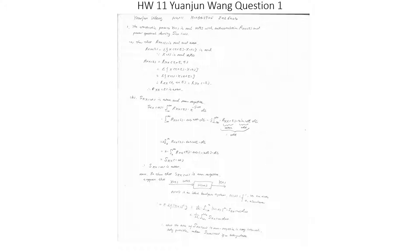This equals the integral from negative infinity to infinity of R_xx(τ) times cos(ωτ) dτ, minus j times the integral from negative infinity to infinity of R_xx(τ) times sin(ωτ) dτ. Since R_xx(τ) is even and sin(ωτ) is odd, their product is odd, so the imaginary part vanishes. This simplifies to 2 times the integral from 0 to infinity of R_xx(τ) cos(ωτ) dτ, which equals 2 times the integral from 0 to infinity of R_xx(τ) cos(−ωτ) dτ, which equals S_xx(−ω). So the power spectral density is even.